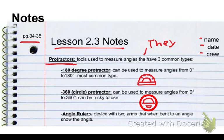And then we have an angle ruler. An angle ruler is a device with two arms that when bent to an angle shows the angle, and they usually look kind of like a ruler with a rounded edge here, and there's a little hinge there, and you slide them this way or that way, and you read them down here.